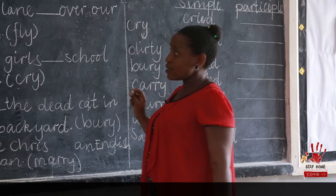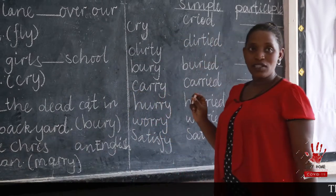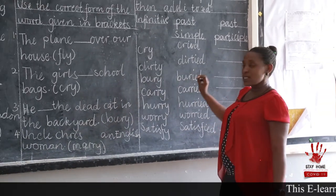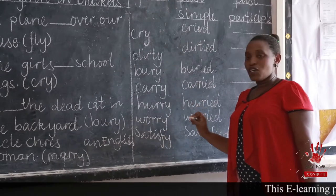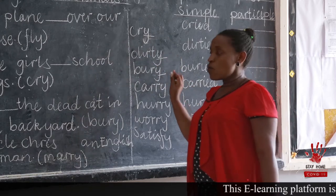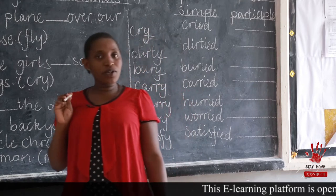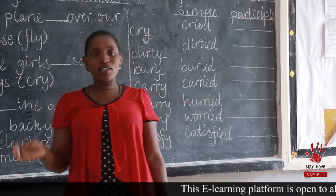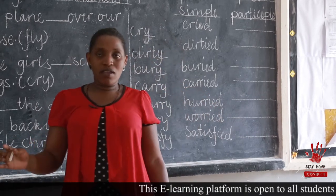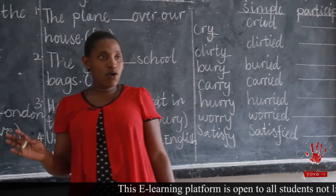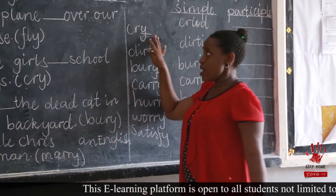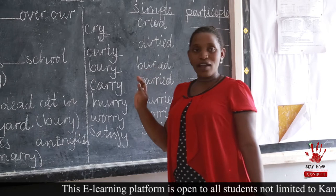We looked at those verbs that end with ED. Today we are looking at another category of verbs that add ED. We also looked at those verbs that have Y preceded by a vowel, and we said those ones we just add ED. For example, the verb play, the verb pray, the verb employ, the verb deploy — since Y is preceded by a vowel, we just add ED.